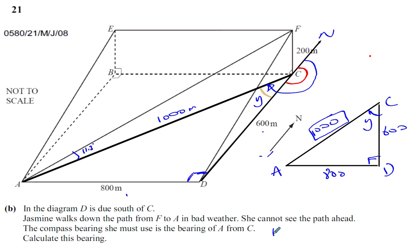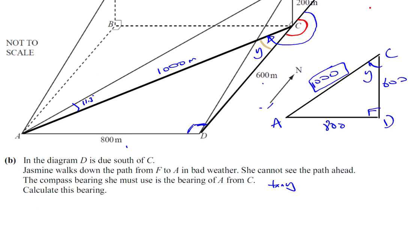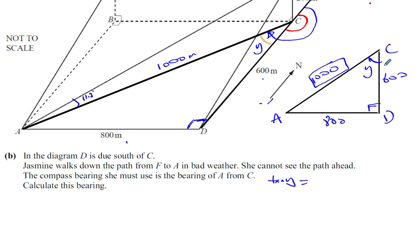The tangent of Y is equal to the opposite, which is 800, over the adjacent, which is 600, which is 8 over 6, which is 4 over 3.